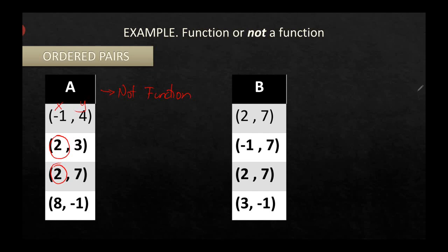For ordered pairs in example B — (2, 7), (negative 1, 7), (2, 7), (3, negative 1) — the repeated pair (2, 7) can be written as a single entry. Since the domain values are 2, negative 1, and 3, each mapping to exactly one output, therefore B is a function.